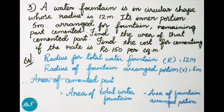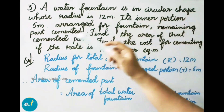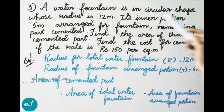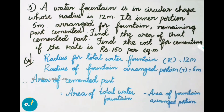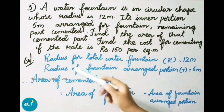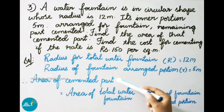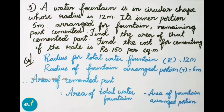Question number 3: A water fountain is in circular shape whose radius is 12 meters. Its inner portion of 5 meters is arranged for the fountain. The remaining part is cemented. Find the area of the cemented part and the cost for cementing if the rate is 150 rupees per square meter. Given: capital R = 12 meters (total water fountain radius); small r = 5 meters (fountain portion radius).